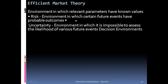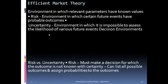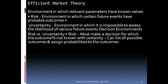These are the decision environments you will encounter in efficient market theory: the risk environment, and the uncertainty in the environment. When discussing risk versus uncertainty — for risk, one must make decisions for which the outcome is not known with certainty, but one can list all possible outcomes and assign probabilities to those outcomes.